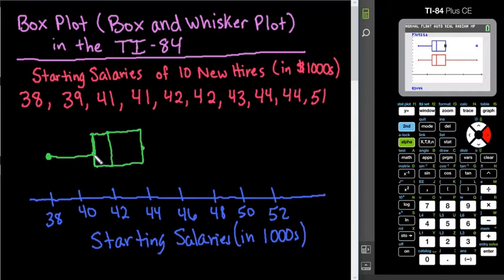That means that 25% of our data points fall between 38 and 41,000. 25% fall between 41 and 42,000. And then approximately 25% fall between 42 and 44. And then we have one outlier over here at 51.